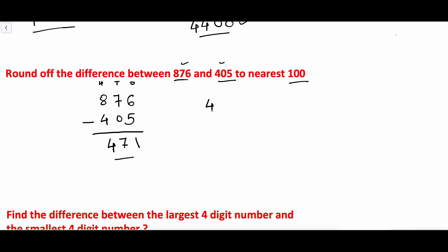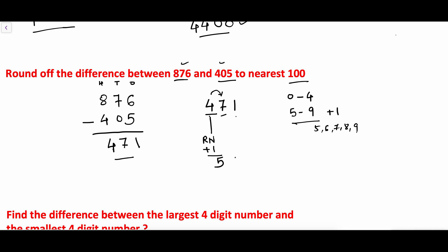Now we round off the difference 471 to the nearest 100. The hundreds digit is 4, our rounding number. The digit just to its right is 7, which is between 5 and 9, so we add 1 to the rounding number, making it 5, and change all right side digits to 0. So 471 is rounded off to 500. This is the final answer.